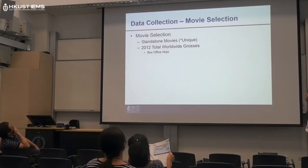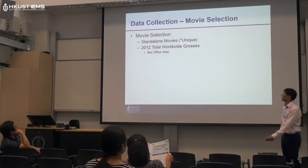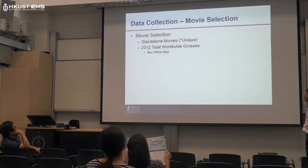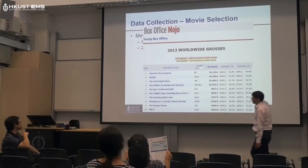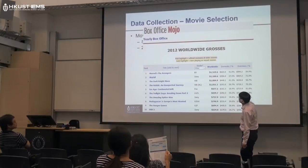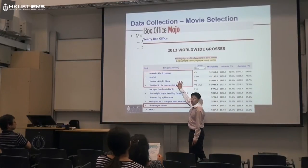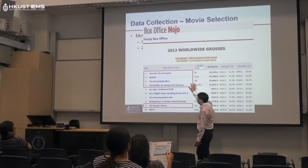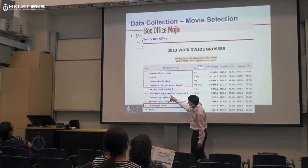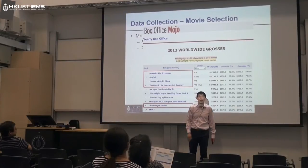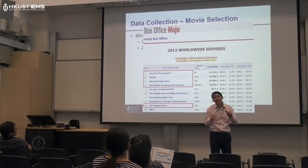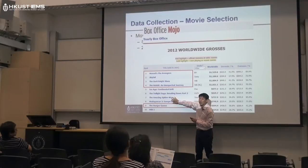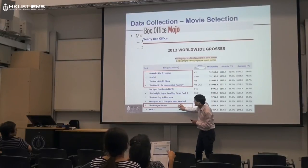We then choose specific movies. We focus on movies, and we look at the worldwide box office results for 2012. Those are the top movies that year — The Avengers and others. We have some constraints on the movies we study. One constraint is that the names must be unique. For example, Spiderman is not unique — there are many different versions. When users search for Spiderman, what are they looking for? The movie or something else? That's why we skipped some titles and picked five specific ones.